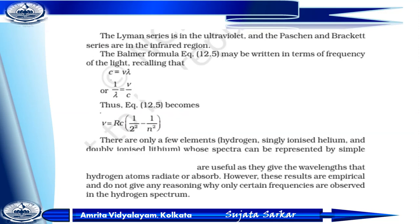The Lyman series is in the ultraviolet region, and the Paschen and Brackett series are in the infrared region. The Balmer formula can also be written in terms of frequency of light. Since c = νλ, we have 1/λ = ν/c, so ν = Rc(1/2² − 1/n²). Only a few elements — hydrogen, singly ionized helium, and doubly ionized lithium — have spectra that can be represented by such a simple formula. This gives the wavelength that the hydrogen atom radiates or absorbs.